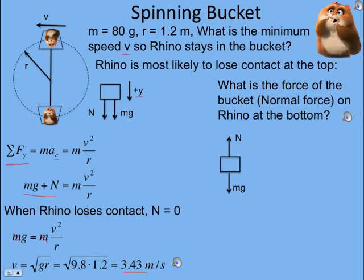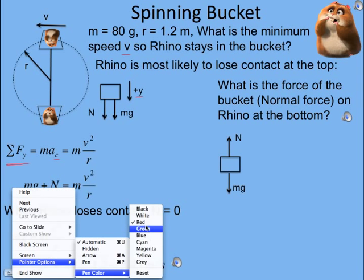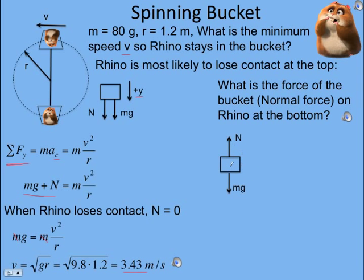We draw a free body diagram of Rhino at the bottom. At the bottom of the circle, the normal force is up and weight is down. What's the direction of the acceleration? It's toward the center, so now I make positive y up.